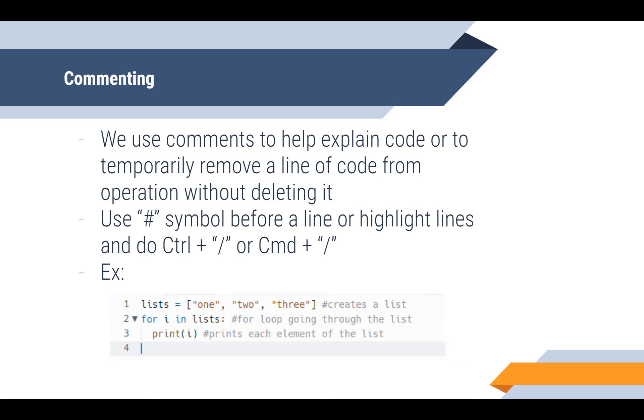Basically, the way we get our computers to ignore those lines is adding this hashtag symbol. So anything you put after hashtag symbol on that line will be grayed out like this, and it will be just ignored by the computer. So here, if you have hashtag creates a list, hashtag for loop going through the list, and hashtag prints each element of the list, even if you don't know really how to make a list or what a for loop is, now you kind of have some idea of what the code does. So now you can see how helpful that could be if you're working on more complex code where you don't know everything exactly what it does.